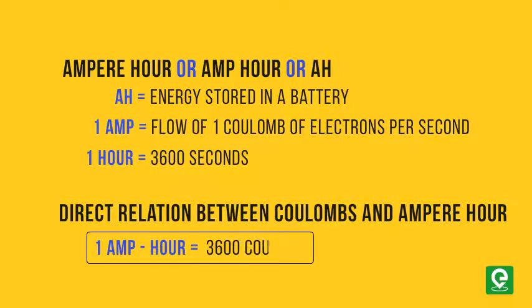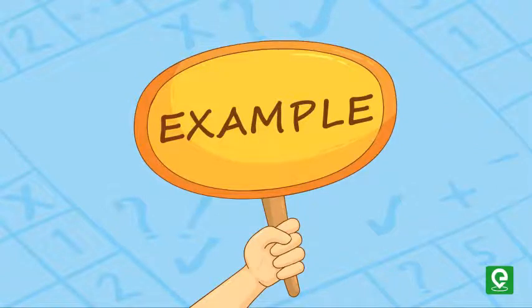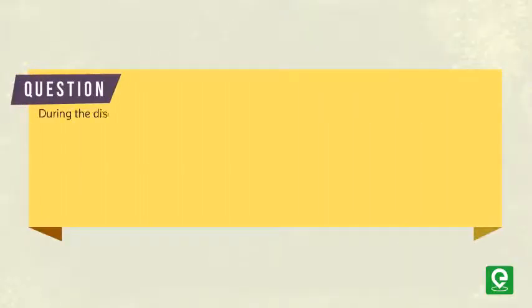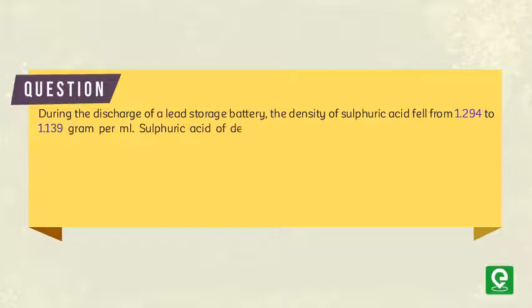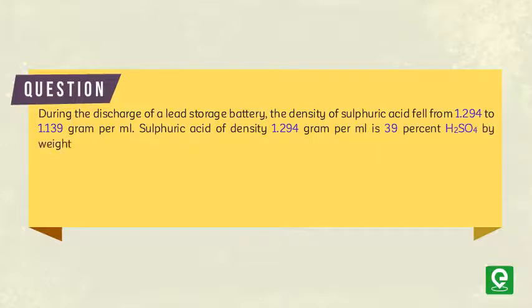Let's review an example to understand the application of this concept. Question: During a discharge of a lead storage battery, the density of sulfuric acid fell from 1.294 to 1.139 g/mL. Sulfuric acid of density 1.294 g/mL is 39% H₂SO₄ by weight, and that of density 1.139 g/mL is 20% H₂SO₄ by weight.